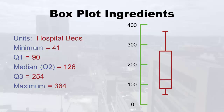Now let's look at the interquartile range. Remember how you calculated this — you took Q3 minus Q1. That means this box is 164 beds long. So that's where your IQR is — this is a visual, pictorial representation of your IQR. We did our box plot, we did our interquartile range, and you're probably wondering why we just did this.